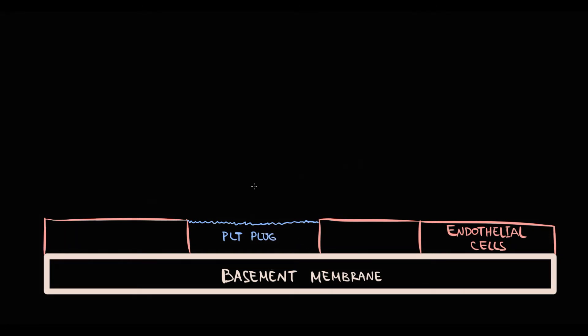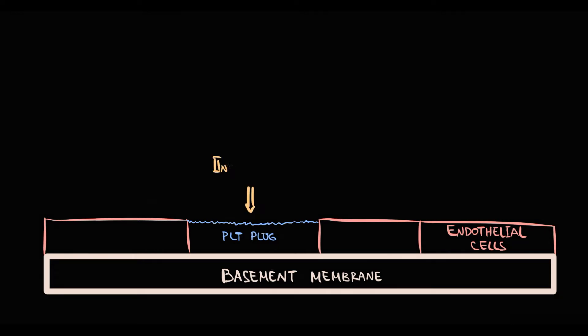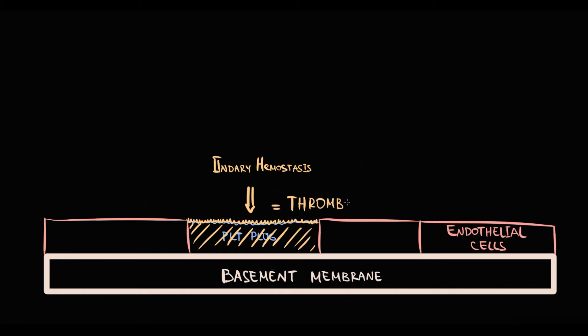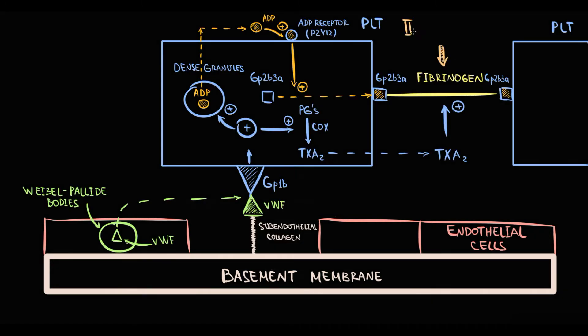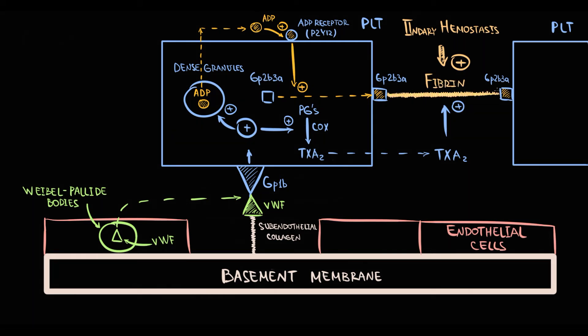But the platelet plug is weak, and to stabilize it — to make it formidable — we have secondary hemostasis. The function of secondary hemostasis is to convert the weak platelet plug into a formidable structure called a thrombus. The thing that makes this platelet plug formidable is the conversion of unstable fibrinogen into stable fibrin. Secondary hemostasis is provided by coagulation factors that form the coagulation cascade.